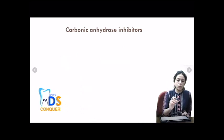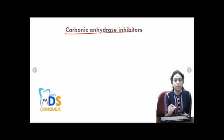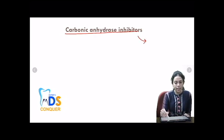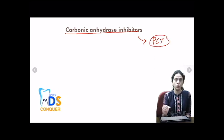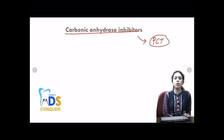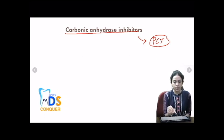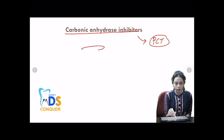This group of drugs — the carbonic anhydrase inhibitors — act at the level of the proximal convoluted tubule (PCT) of the nephron.